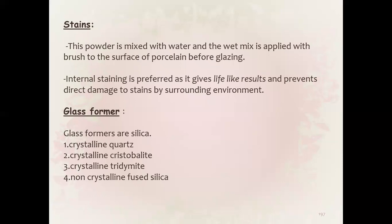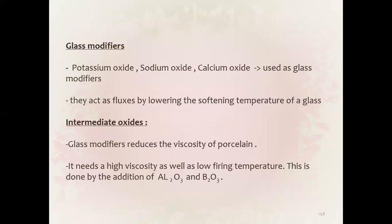Glass formers: silica in various forms — crystalline quartz, cristobalite, and non-fused silica. Glass modifiers: potassium oxide, sodium oxide, calcium oxide — added as fluxes by lowering the softening temperature of the glass. Intermediate oxides are also present.